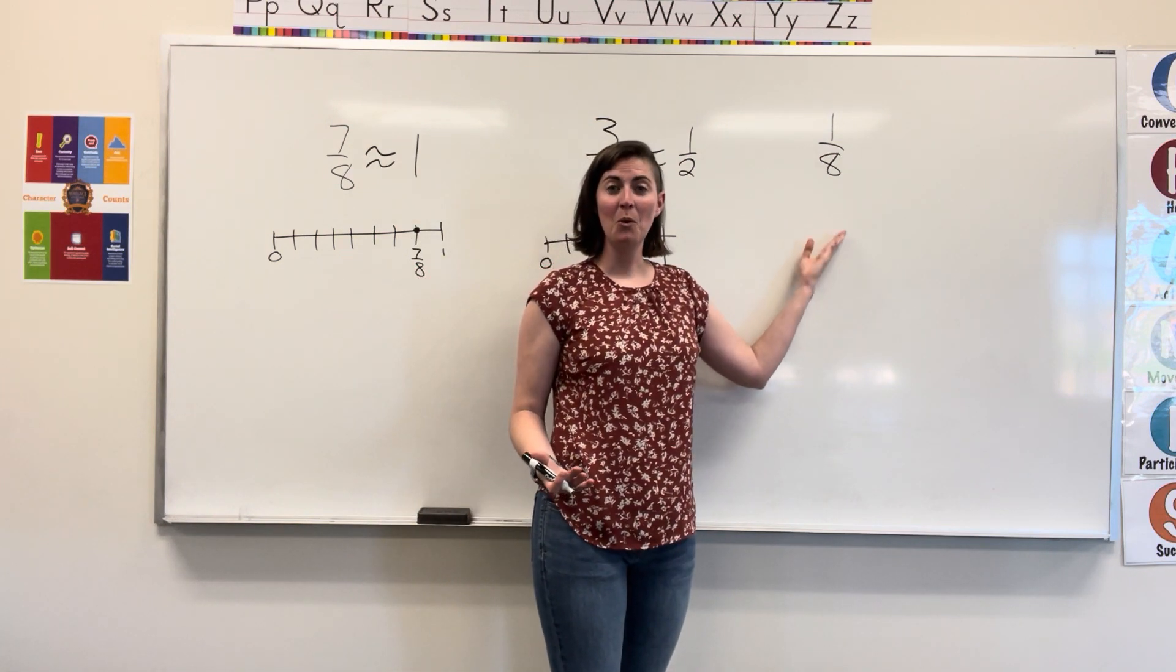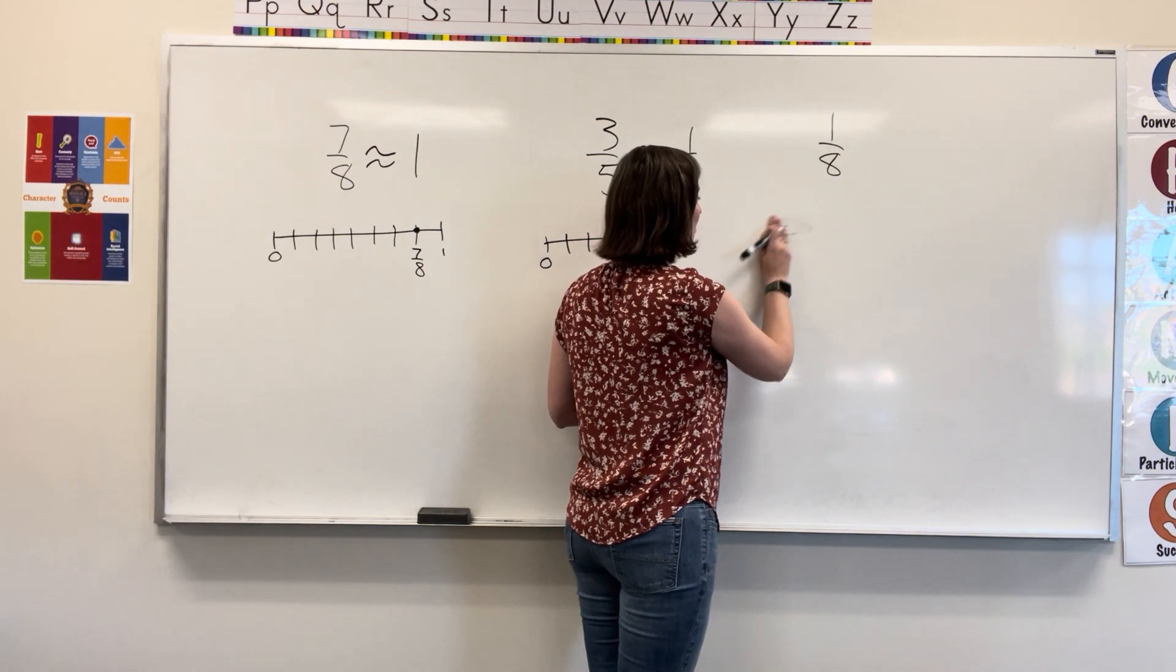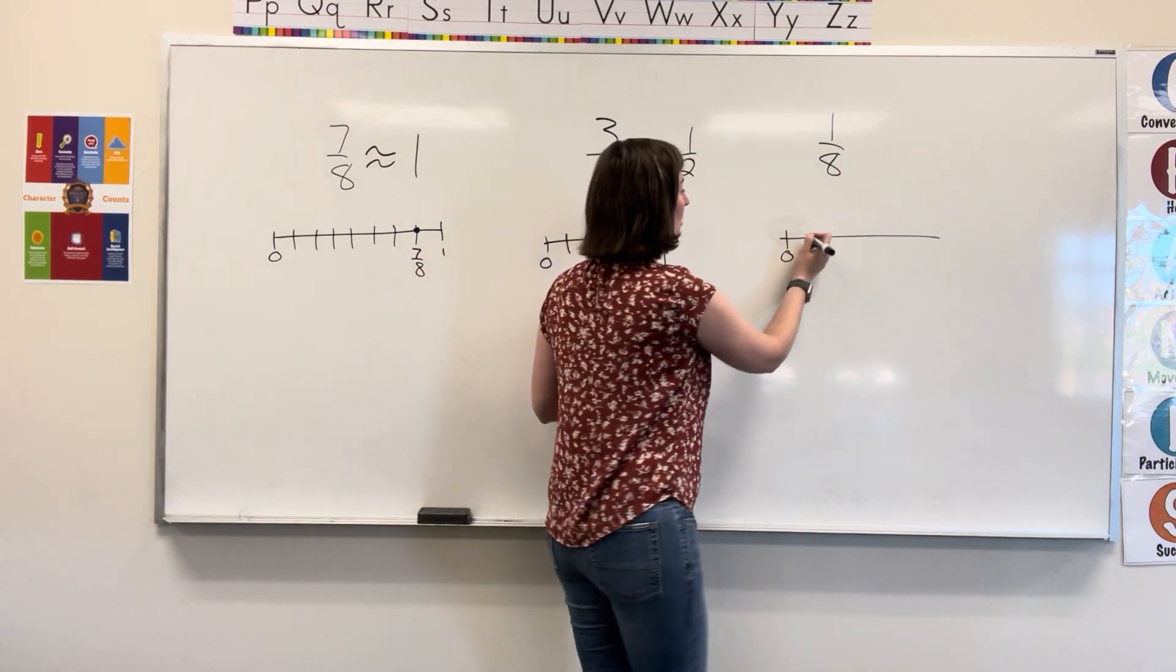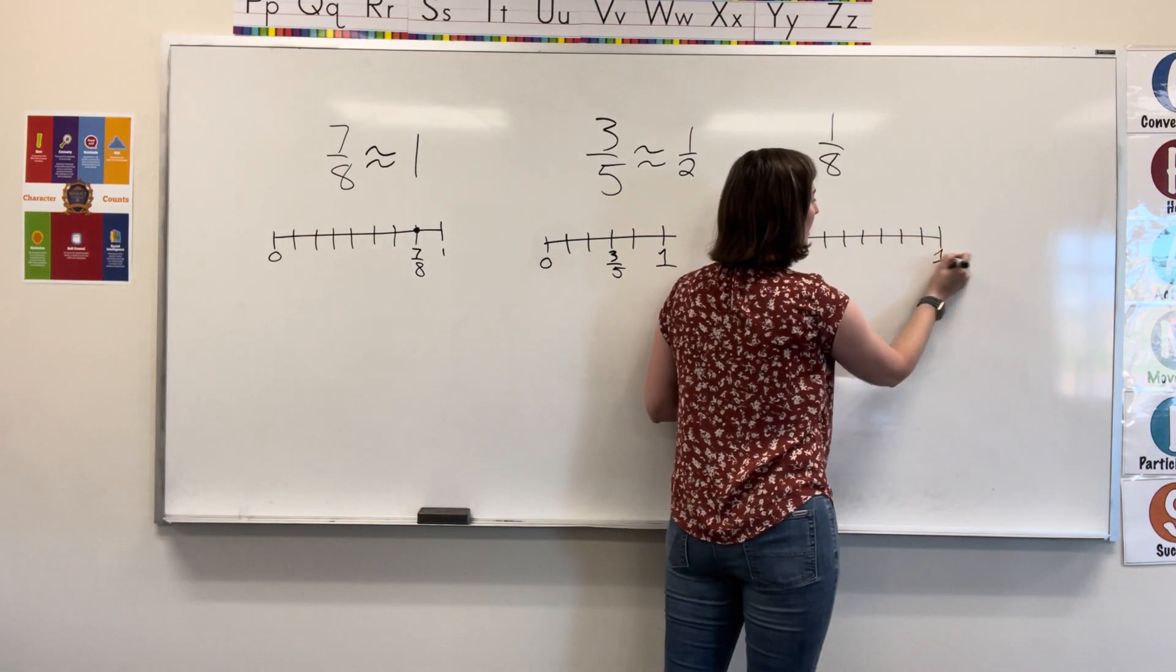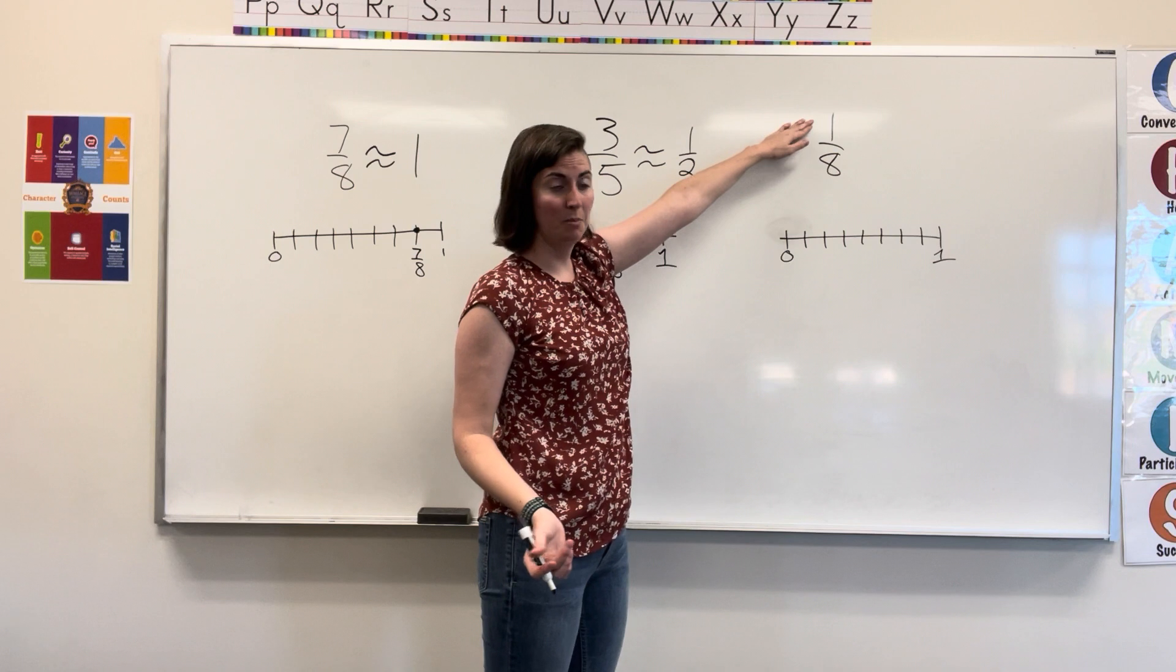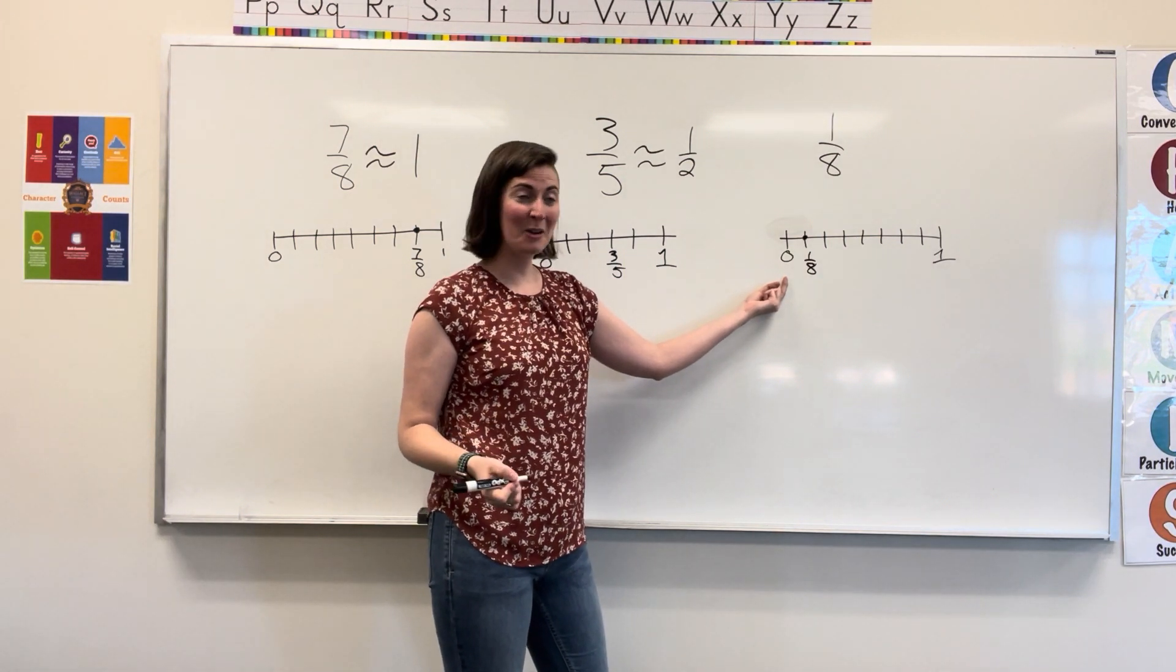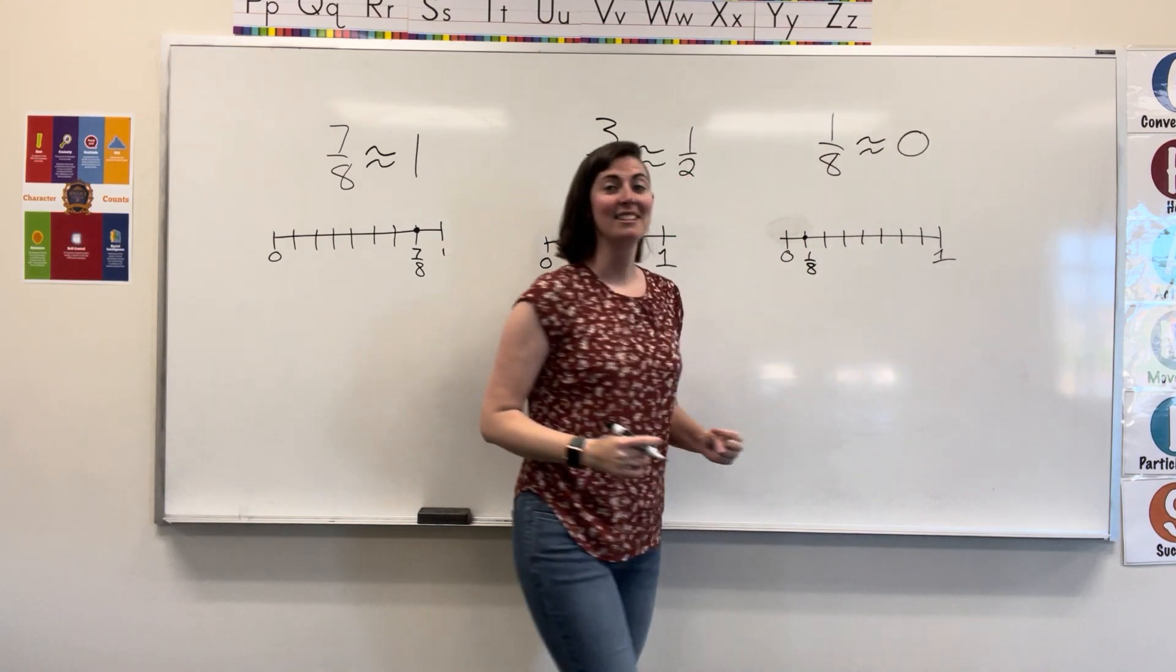Last example, rounding one eighth. Again, we're going to make a really quick number line starting at zero and counting eight parts. One, two, three, four, five, six, seven, eight. And that's my one whole. Now, I only want one of those parts, so I count one. One eighth is much closer to the benchmark of zero, so one eighth is approximately zero.